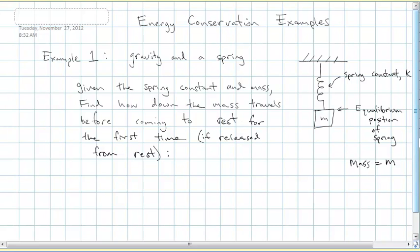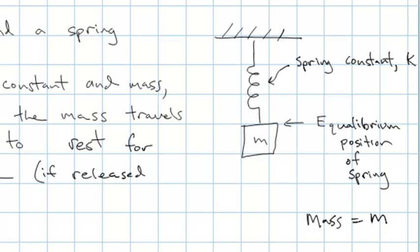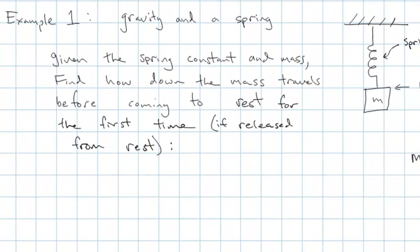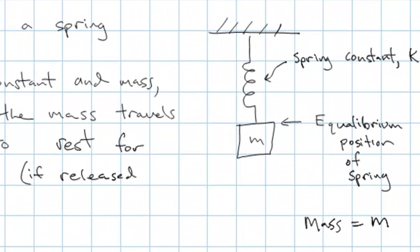Let's work a few example problems using energy conservation. In this first one, we have a mass hanging from a spring. The mass starts out at the equilibrium position of the spring and it's at rest. We're going to let go of it, and we want to know how far down does it travel before it comes to rest for the first time. So a typical energy conservation problem.